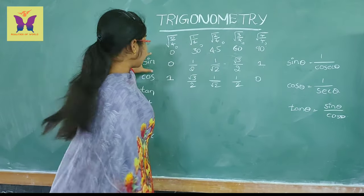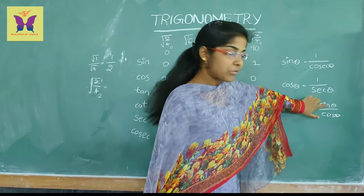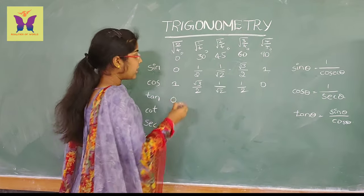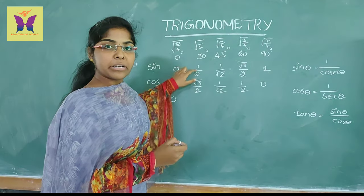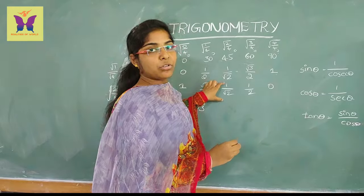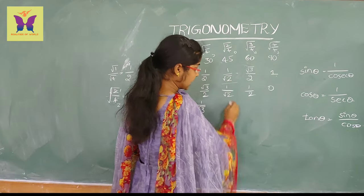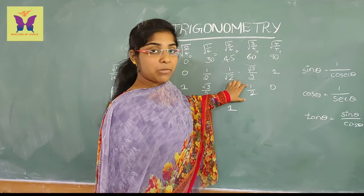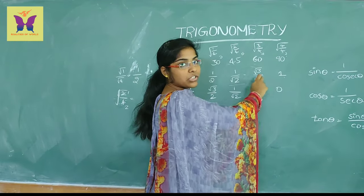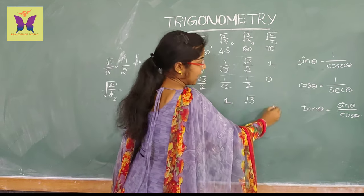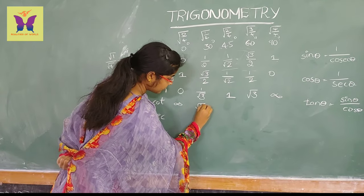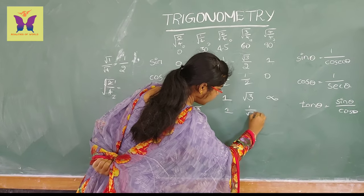We will now find tan values. Tan theta equals sin theta by cos theta. For 0 degrees: 0 by 1 equals 0. For 30 degrees: 1 by 2 divided by root 3 by 2 — the 2s cancel, giving 1 by root 3. For 45 degrees: 1 by root 2 divided by 1 by root 2 — they cancel, giving 1. For 60 degrees: root 3 by 2 divided by 1 by 2 — the 2s cancel, giving root 3. For 90 degrees: 1 by 0 is infinity. If you reverse the tan values, you get the cot values: root 3, 1, 1 by root 3, and 0.